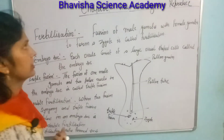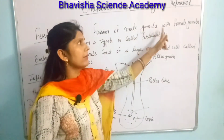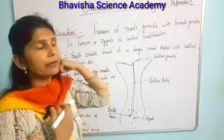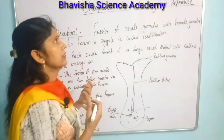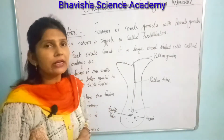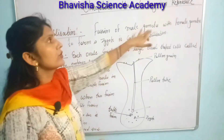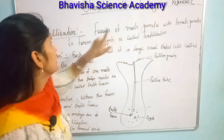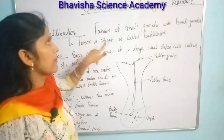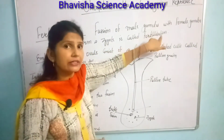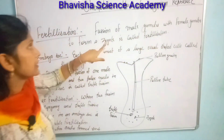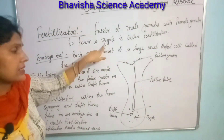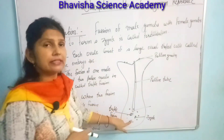After pollination, fertilization takes place. Fertilization is the fusion of the male gamete with the female gamete. The male gamete is the pollen grain, which fuses with the female gamete to form a zygote. The zygote is the initial stage of a seed.